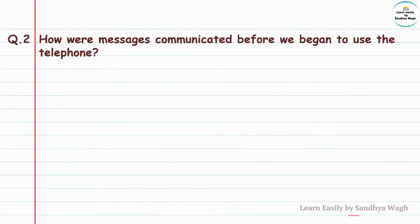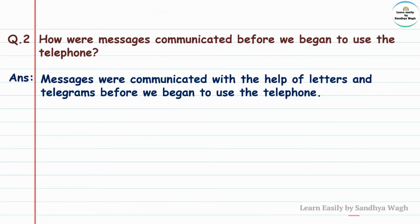Question 2: How were messages communicated before we began to use the telephone? Before we used the mobile, how was communication done? How were messages sent to each other?